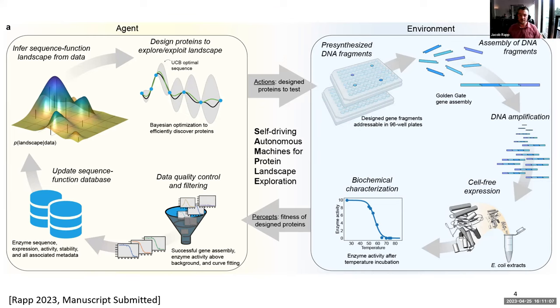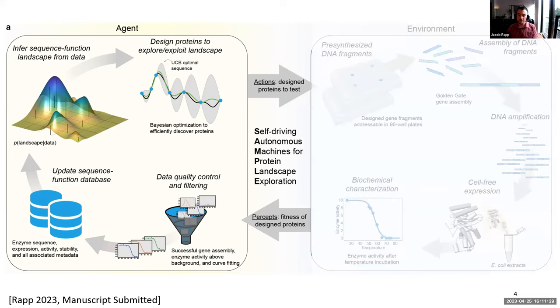There's a few data quality filtering steps where we make sure that we're not getting false negatives and we try to avoid false positives as well. You update the database. You now have a different sequence-function model. And the cycle continues. Every time you run through the cycle, you add more data to your sequence-function model. And it gives you different choices. Now we're going to focus a little bit on just the left side here. How does this AI work? What are its goals? How does it function?